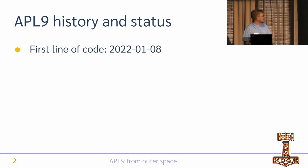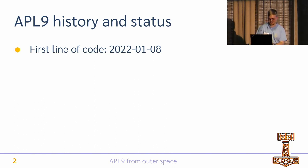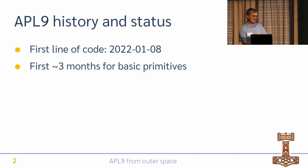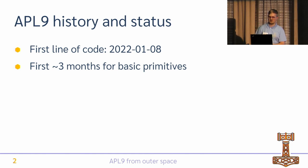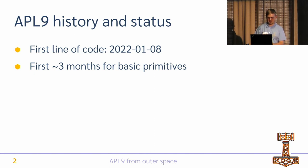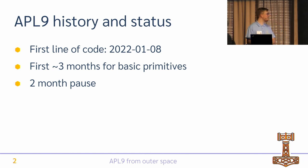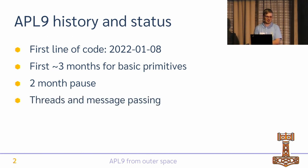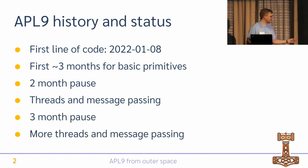A bit of the history and current status: it all started in January this year — the first line of code, at least that's what my Git repository says. I spent around three months adding basic primitives, and a lot of those are implemented as models, so implemented in terms of other primitives. Performance is not good, but I don't really care about that for this project. Then I had a pause, was asked to do a small presentation internally at Dialog, did some stuff, had another pause, and was asked to do this presentation, so I did some more.